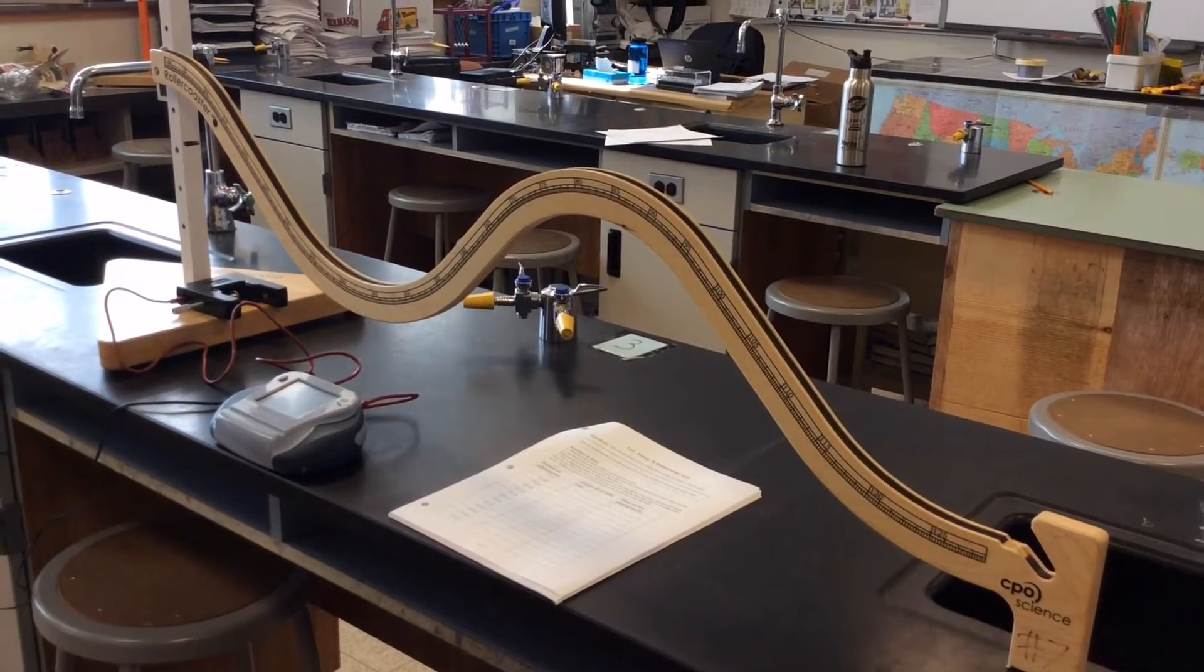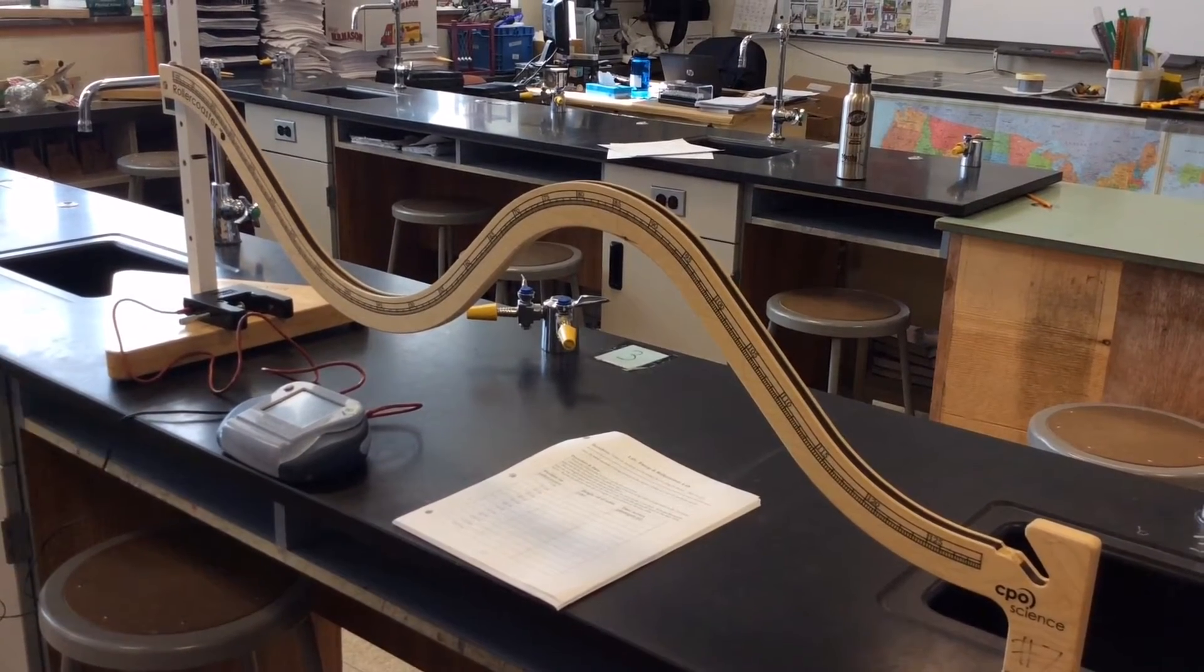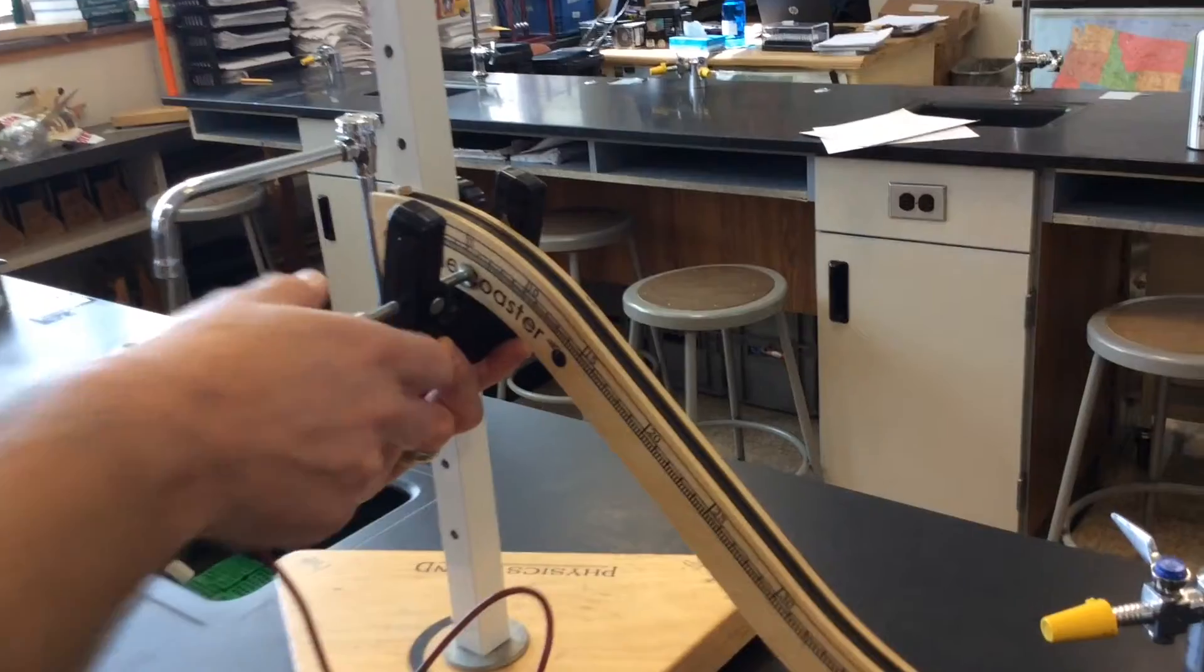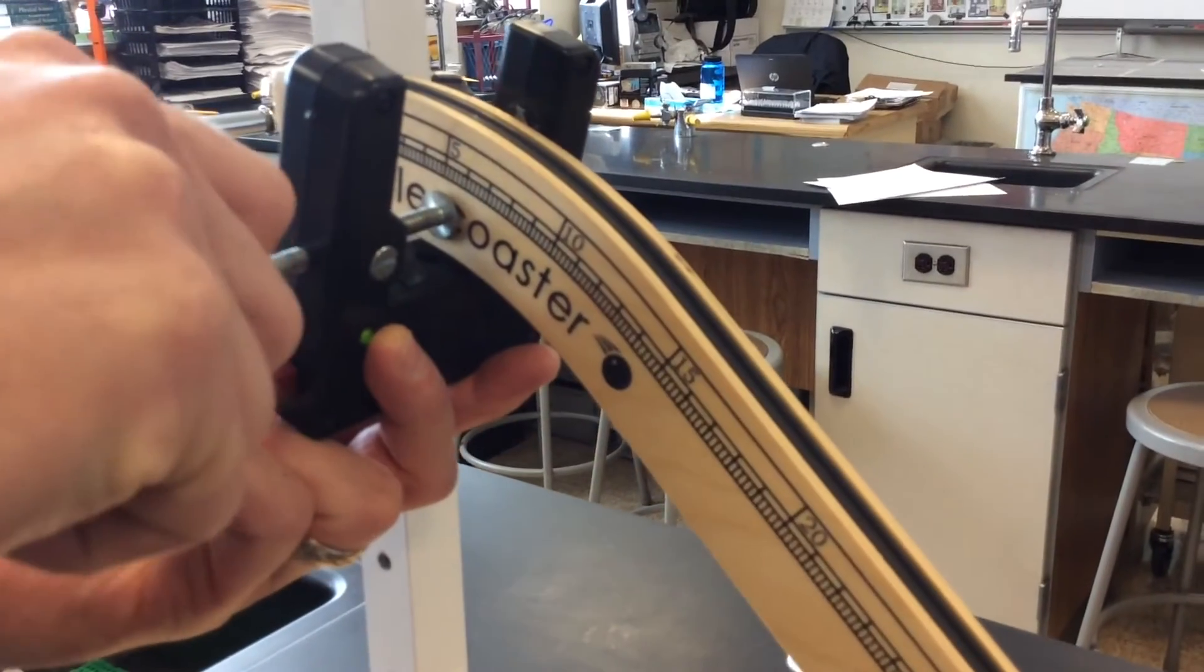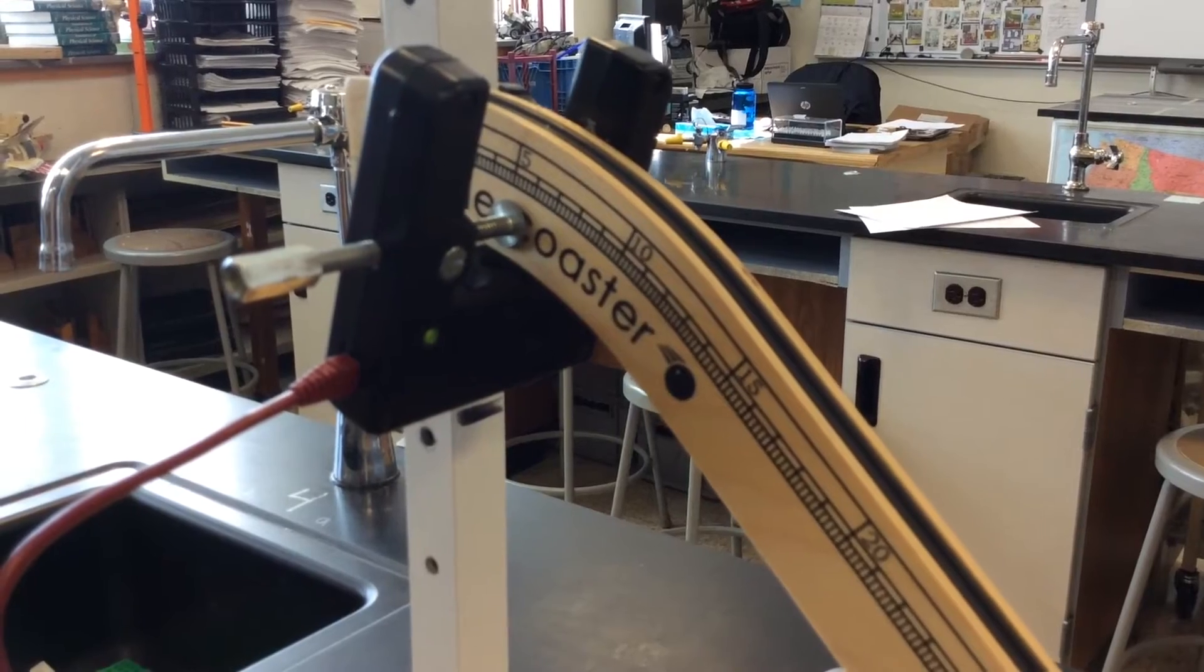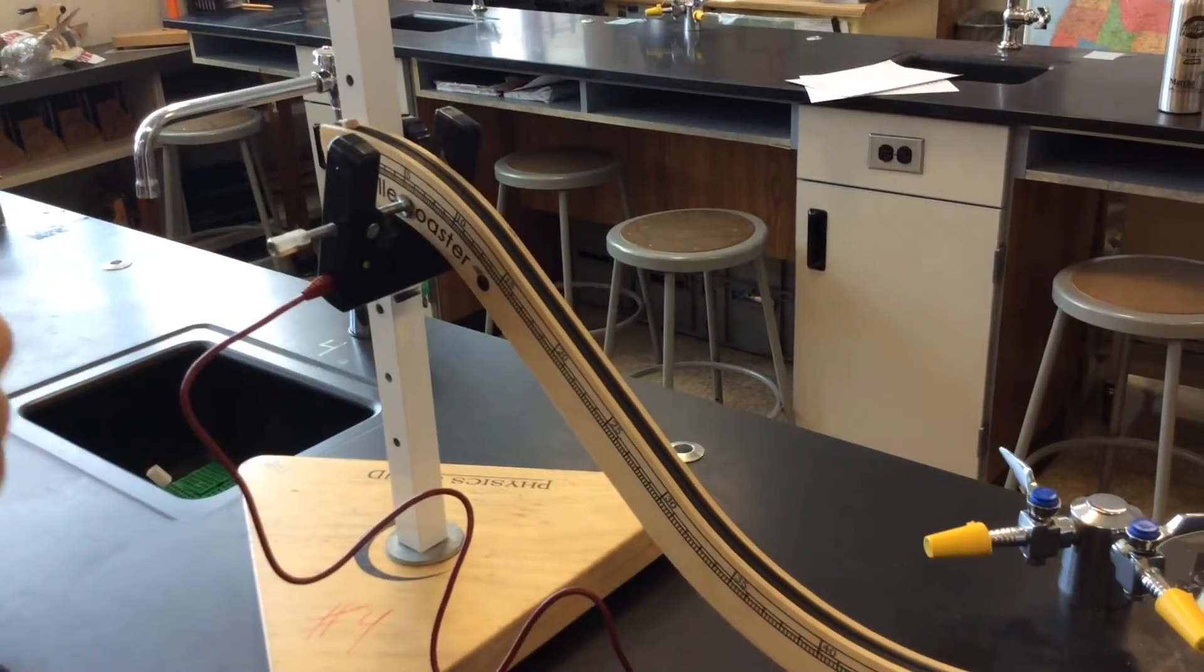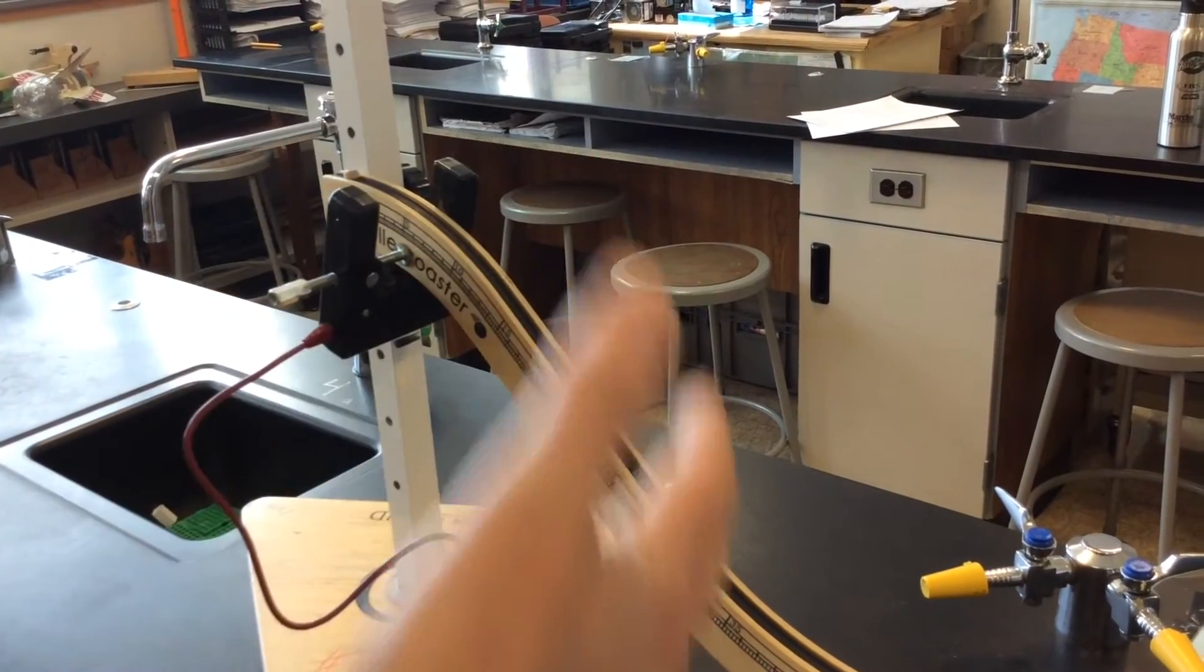We're going to be measuring speeds of the marble as the marble moves down the ramp at different intervals. We're going to start out with the photo gate at five centimeters, and we'll be moving the photo gate down the Roller Coaster Ramp from five to 15 to 25 to 35 centimeters, and so forth.